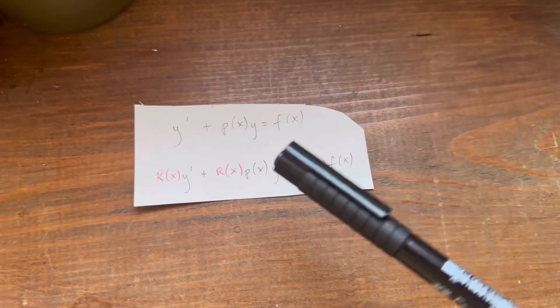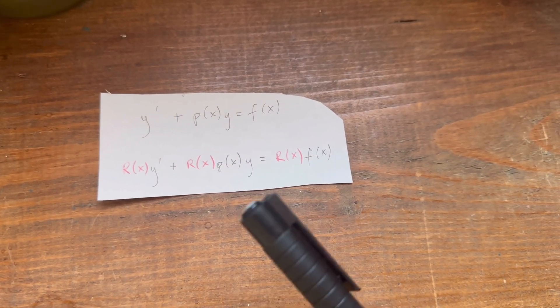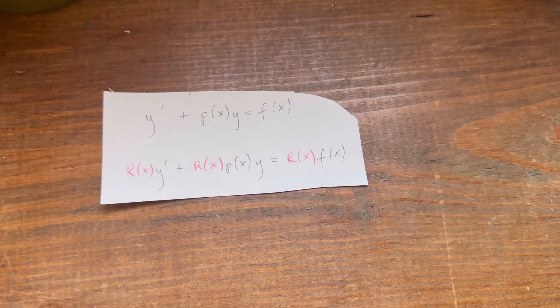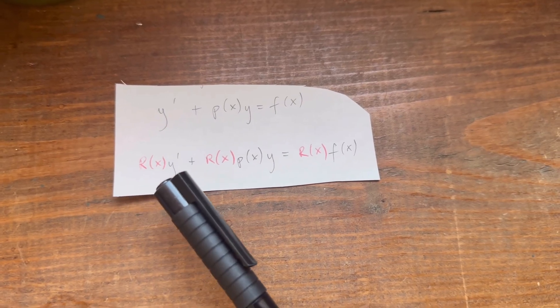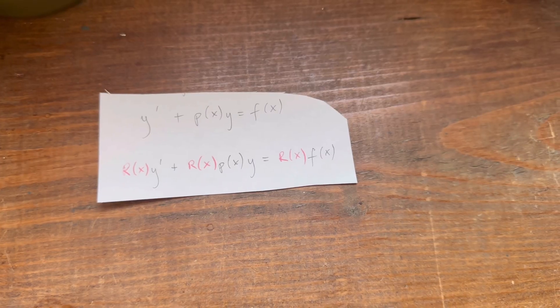A lot of the times, it's just told to use it, but I want to show you why it works. So here's the general form for the first-order linear differential equation. What we're going to do is multiply everything by an r(x). As you can see, we have r(x)y' plus r(x)p(x)y equals r(x)f(x).